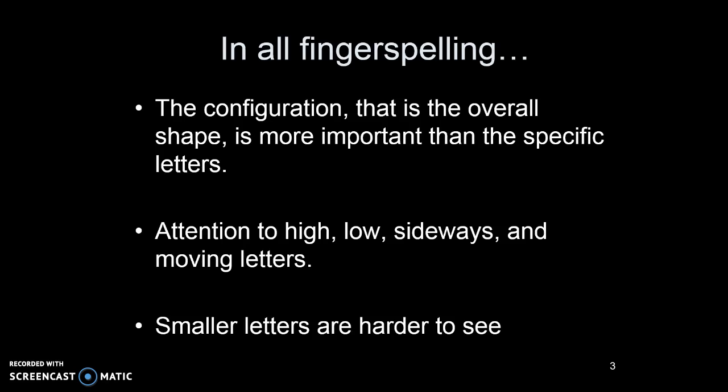Smaller letters like A, E, S, and T are going to be much more difficult to see. This is the same for English speakers reading cursive — it's easy to spot a T in cursive because it's a high letter and it's crossed, but more difficult to see the difference between an E and an S in many people's cursive handwriting because they're so small. So keep in mind that when you're reading fingerspelling, if you're trying to see individual letters — saying the letters to yourself as you watch — then you are doing the wrong thing.